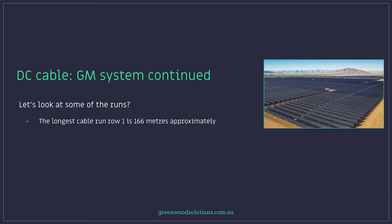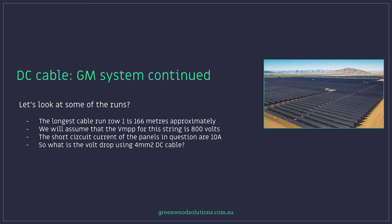The longest cable run, row 1, is 166 meters approximately. We will assume that the voltage maximum power point for this string is 800 and the short circuit current of the panels in question are 10 amps. So what is the volt drop using 4mm squared DC cable?